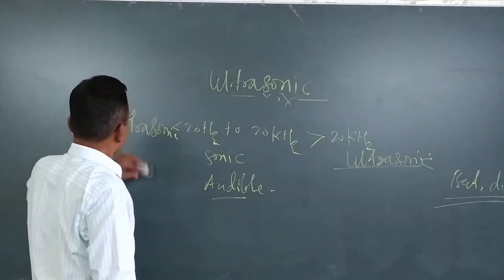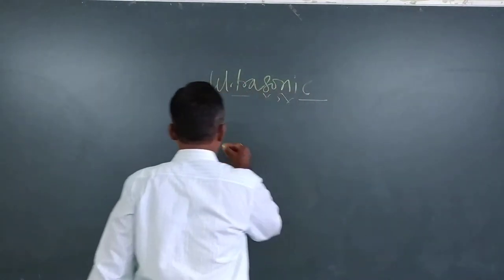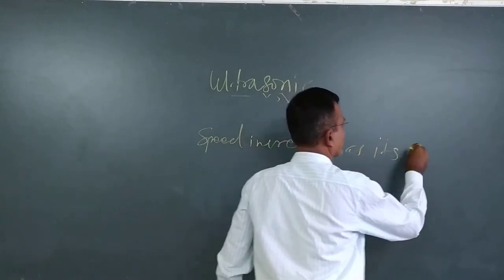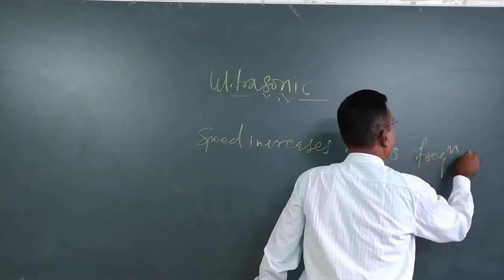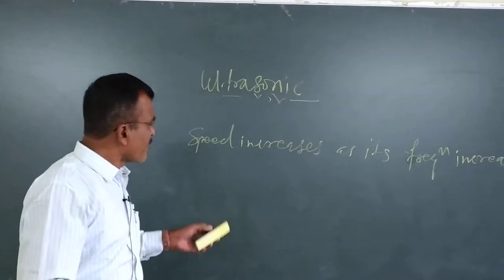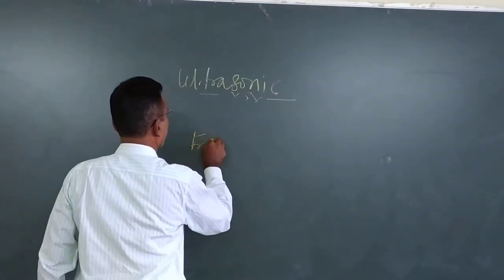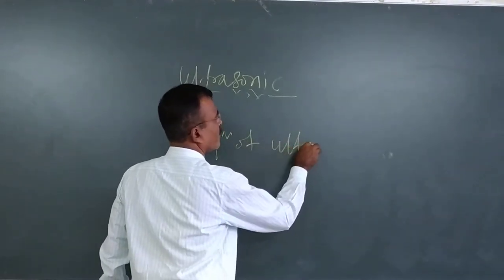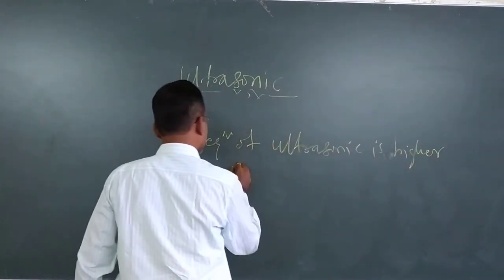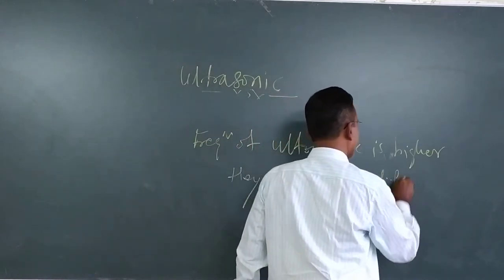The speed of ultrasonic waves increases with increasing frequency — higher the frequency, higher will be the speed. As the frequency is higher, they produce less diffraction, or negligible diffraction.